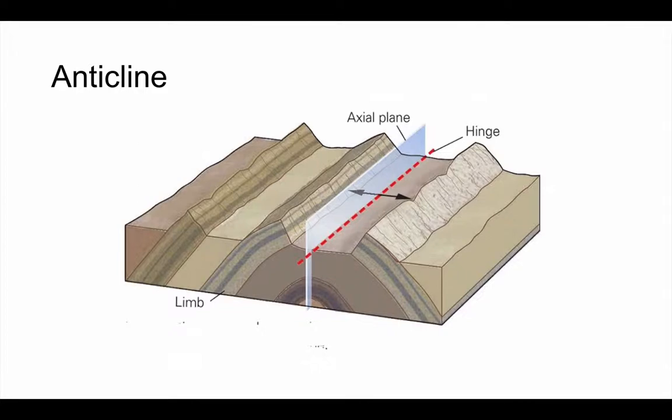And the age of those beds decreases as we get further away from the axial plane. The dip of the beds, which you can see marked with the black arrows on this diagram, points away from that axial plane. These are the two key features that allow us to identify a fold as an anticline, particularly on a geological map where you can't see that side-on cross-sectional view.